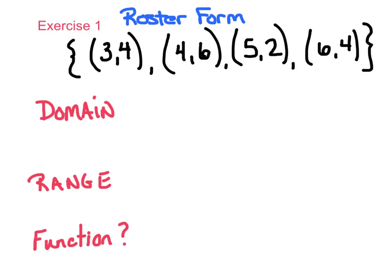Exercise one. This notation is called roster form — let's put that in our notebook. We're given the points (3,4), (4,6), (5,2), and (6,4). The question is: state the domain, range, and is this a function? It's quite simple as long as we keep them straight.